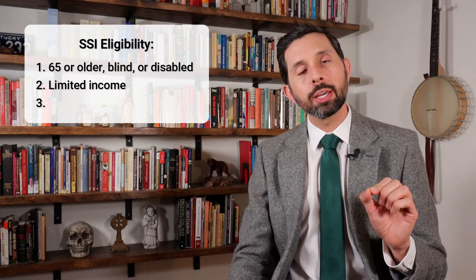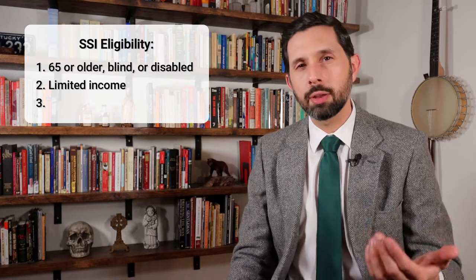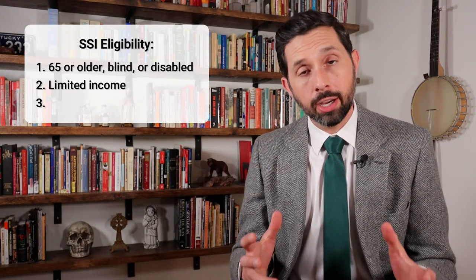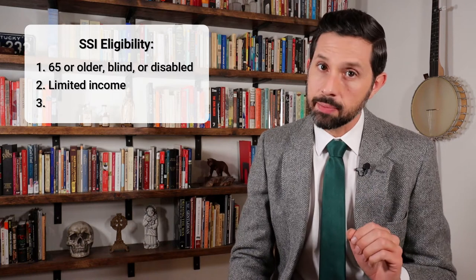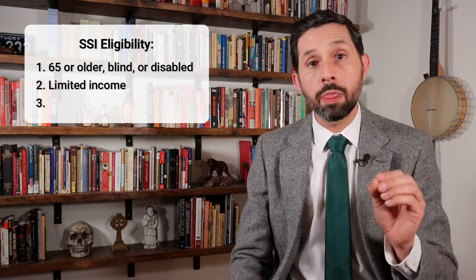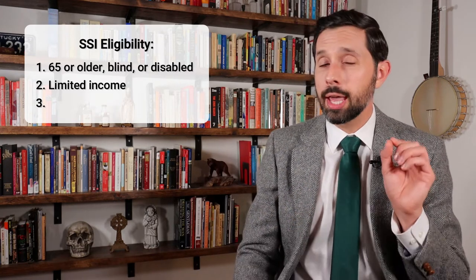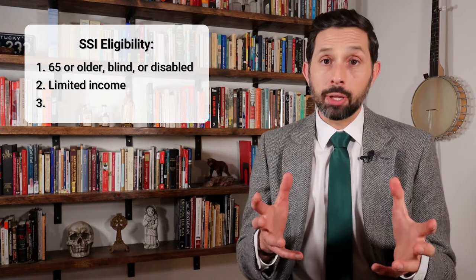The SSA only counts certain types of income when determining your eligibility. Countable income generally includes money you get from work, investments, other benefit programs, and from friends and relatives. It can also include any free or discounted food and housing you get, and your spouse's income if you live with them. Generally, the more countable income you have, the lower your benefits will be. And if your countable income is higher than the maximum federal benefit rate, you can't get SSI. The maximum federal benefit rate for 2021 is $794 per month for individuals and $1,191 for couples. But remember, not all of your income is counted, so it's possible to earn more than $794 per month and still qualify for SSI. This is pretty complicated, so if you think you might qualify, I recommend applying, and the SSA will help you figure it out.